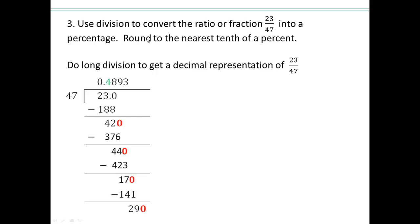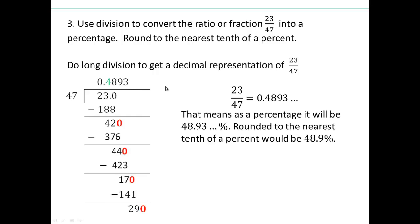You can keep going, but remember it says to round to the nearest tenth of a percent, so I'm not going to work any harder than I have to. A decimal number as a percent means you move the decimal two places over. So that would be 48.93. So 23 over 47 is 48.93%. Rounding to the nearest tenth — since the 3 is smaller than 5 — it will be 48.9%.